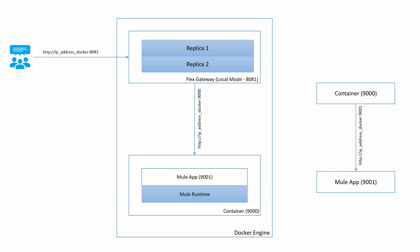Now what we have to do: we have already created a Flex Gateway with two replicas — replica 1 and replica 2. The client has to send the request to the Flex Gateway, then the Flex Gateway will forward the request to the container, and from the container the request will go to the Mule application. Once we enable the Flex Gateway on top of your application, we can apply any policy. The client will not directly send the request to the container; instead, the client will send the request to the gateway and the gateway will redirect it to the MuleSoft Docker container.